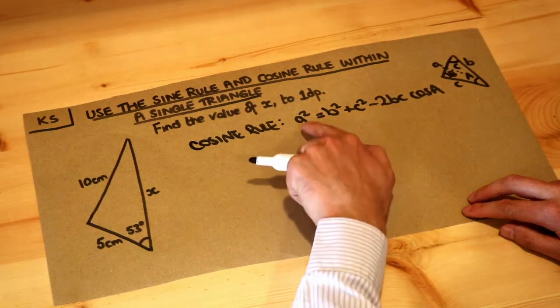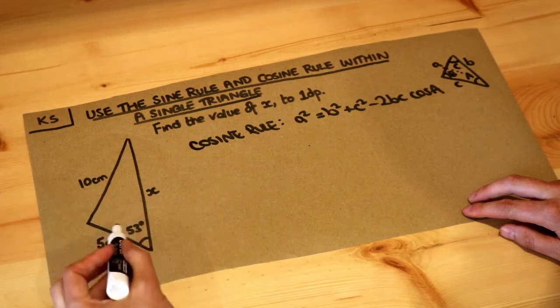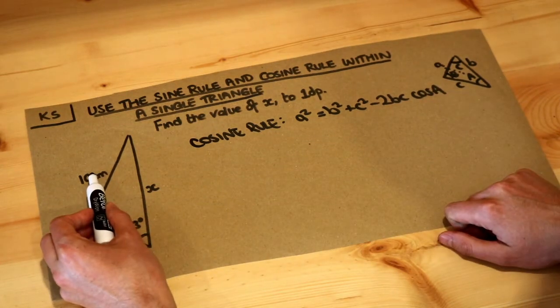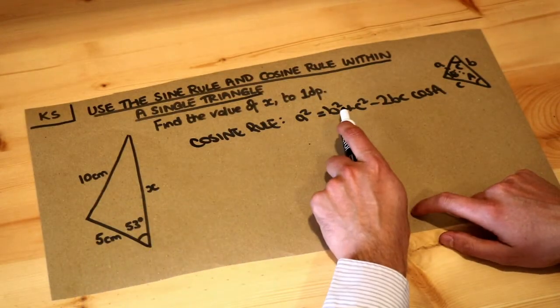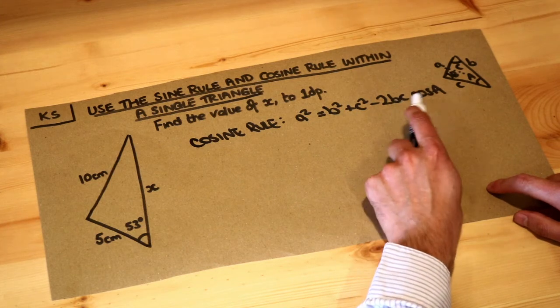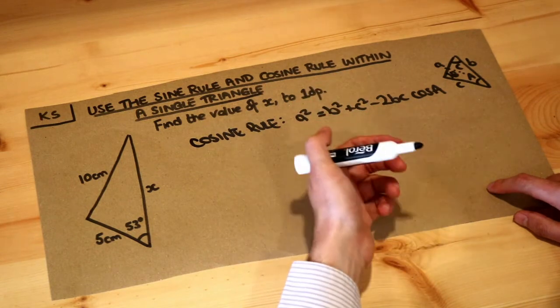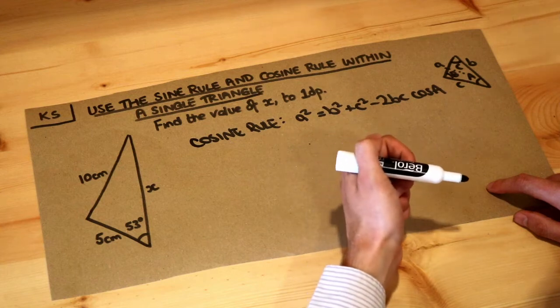The problem is that if you substitute these lengths into here and the angle, you end up with x in two different places. That's the angle capital A there, which means that would be side little a, and this would be like b and c. If x was the b, you'd have x² here and an x term here as well, and you'd end up with a quadratic equation. You can actually solve it like that using the quadratic formula, but it's not the best way of doing it.